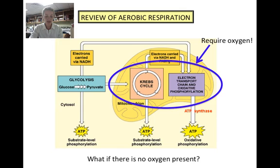If no oxygen is present, there is no final electron acceptor, and the electron transport chain will not function. Since the electron transport chain occurs hand in hand with the Krebs cycle, that won't function either. The effect is that there will be no ATP produced from either of those processes. The only ATP generated will come from glycolysis, which is not oxygen dependent.